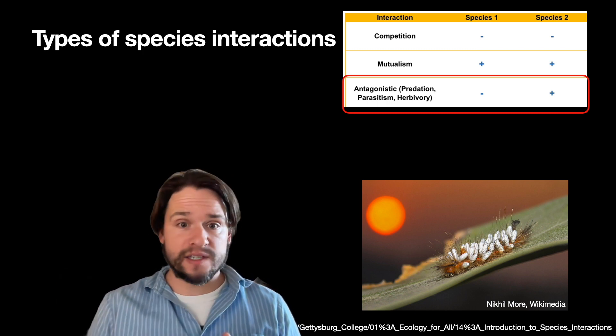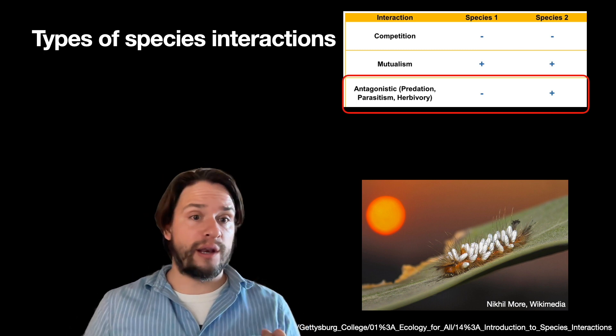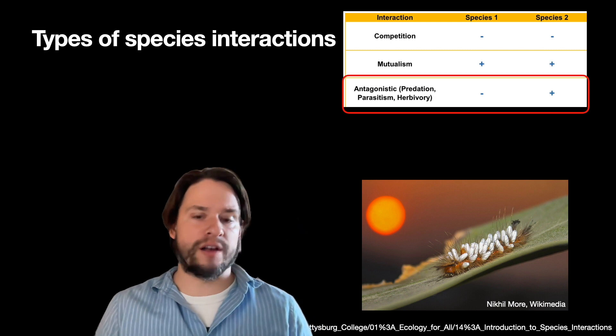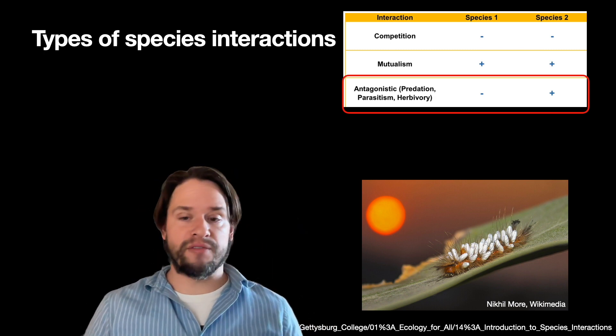Of course, predation, parasitism as shown here, or herbivory are examples where one partner is consuming or gaining a resource at the cost of the other partner. So antagonistic if one partner is benefiting but the other is not.